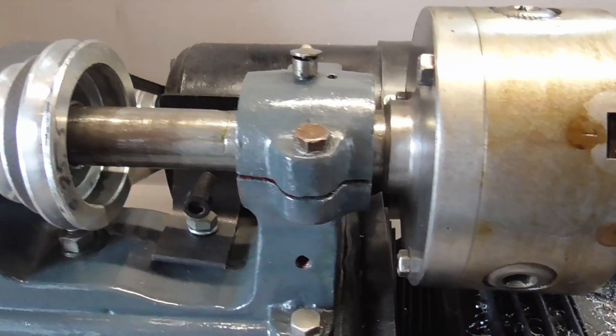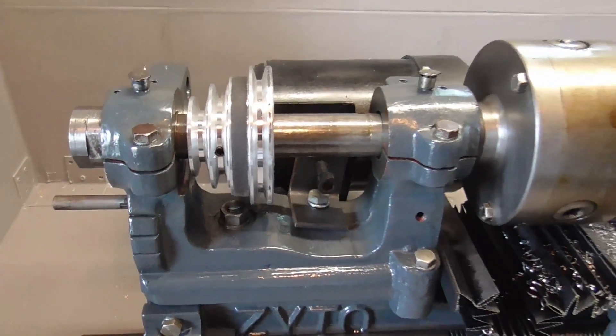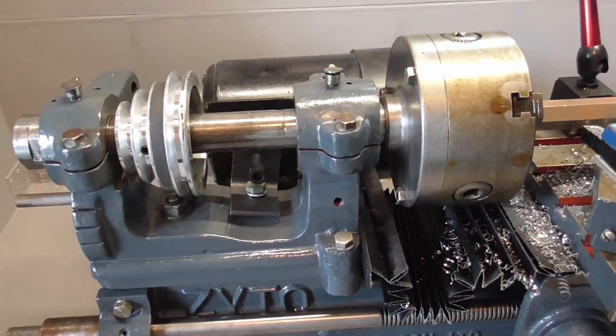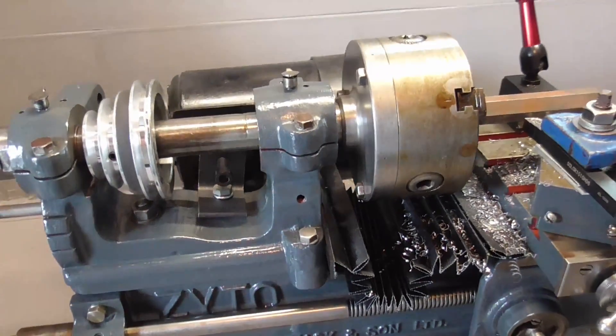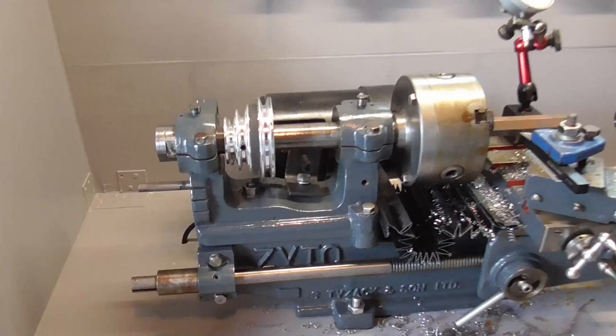Which includes removing the headstock, which bolts onto the bed, and creating a new headstock with tapered roller bearings in order to remove most of the runout and end up with a much better spindle setup.